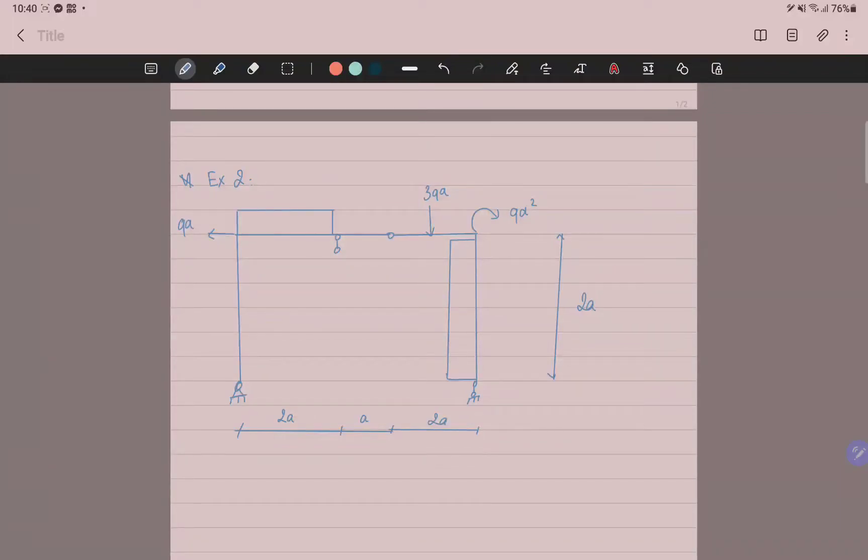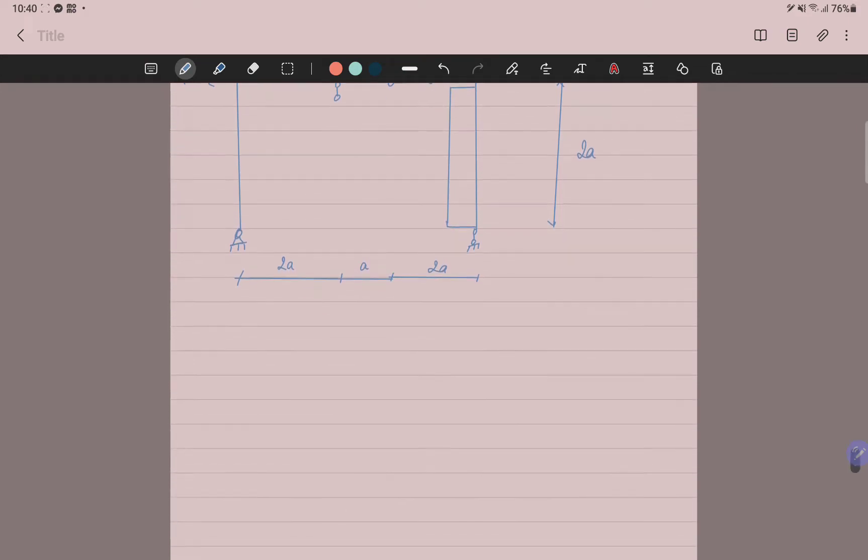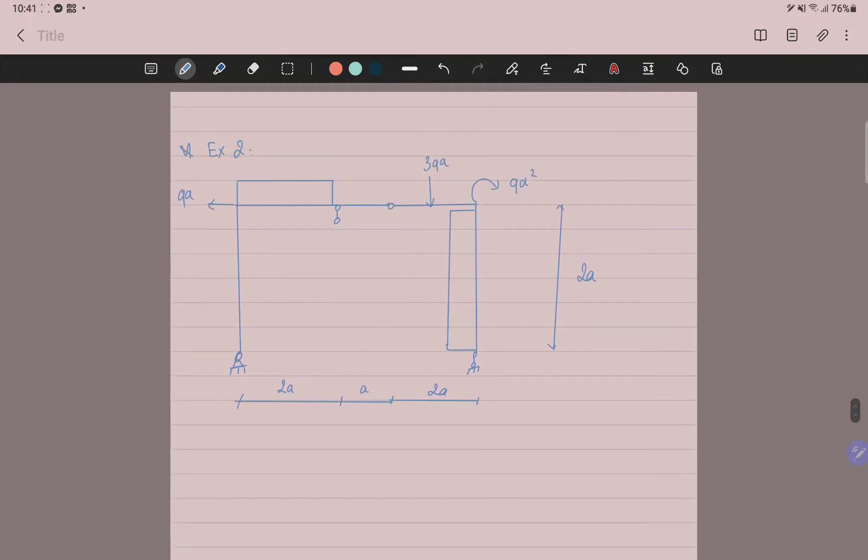Today we will continue with example problems, and the first is the example about the beam. Now we are doing more exercises about the frame. This will follow the steps I talked about yesterday. If you cut the frame at the choice into the chosen box, this is the main system and the subsystem, and we will calculate the subsystem first.